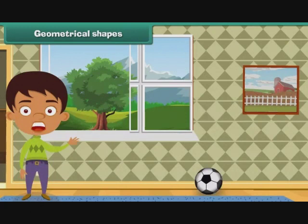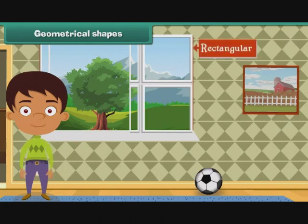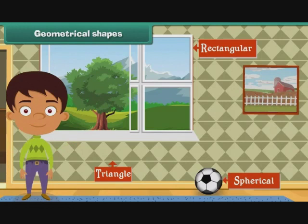If you look closely, you will see a variety of geometrical shapes around you. Look at the window of your room - it is rectangular in shape. The design on the tiles is triangle. Look at the ball lying in the room - its shape is spherical. Now look at the frames of the painting hanging on the wall. It is square in shape. Now you have seen and learned different objects with different shapes.